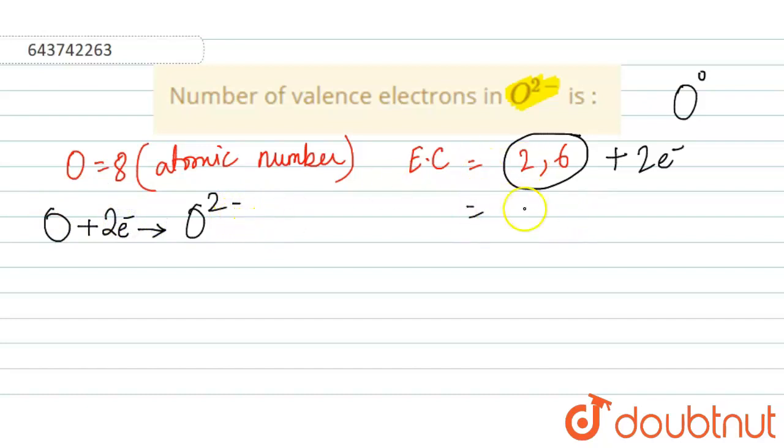That means, the electronic configuration of O2- will be 2,8 because along with 6,